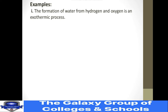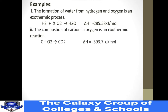Let's study examples of exothermic and endothermic reactions. Example 1: The formation of water from hydrogen and oxygen is an exothermic process, with a heat change of −285.58 kJ/mol. The negative sign indicates it is exothermic. Example 2: Combustion of carbon in oxygen to form carbon dioxide is an exothermic reaction, with a heat change of −393.7 kJ/mol — a large amount of energy released.